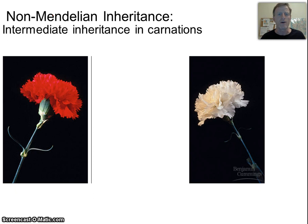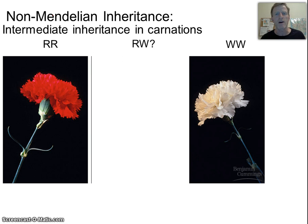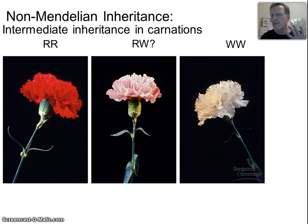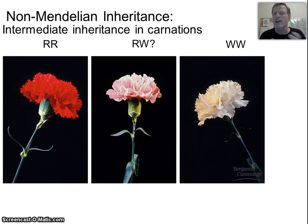For example, if we look at carnations, we've got a red carnation and a white carnation. If the genotypes are RR and RW, what happens if I cross them and get an RW? Well, I get a pink carnation. Mendel wouldn't have expected this — he would have said either red's dominant or white's dominant. This was the hypothesis before Mendel: the idea of blending, kind of like paint. If I take white and red and blend it, I'll get a mixture, something in between.